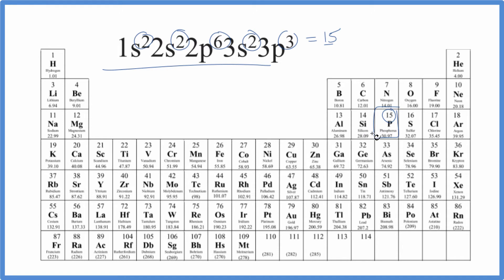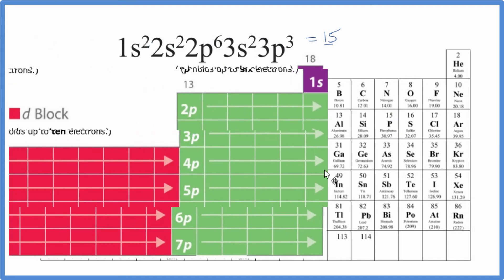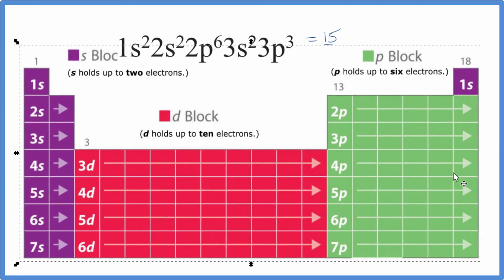There's another way we can do this, though. We can also look at the periodic table divided into orbital blocks. This is a good way to do it because it helps us really understand what's going on here.